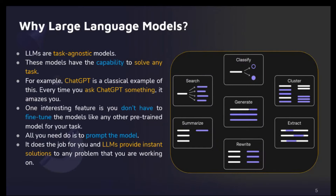Now let's see why LLMs matter. What makes the need for LLMs so demanding? The answer lies in their versatility. These models are known as task agnostic. Why? Because these models are capable of handling an array of tasks without demanding extensive adjustment. If you take an example of ChatGPT, whenever you ask a question from ChatGPT, it always amazes with its answer. At runtime, you have no need to fine-tune the model — you just need to prompt it, and with a single prompt, it will provide you an instant solution to any problem you are facing.